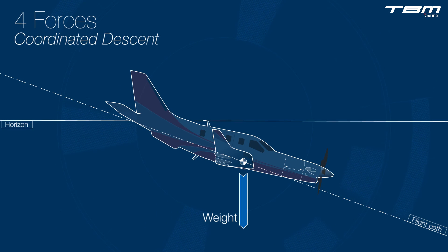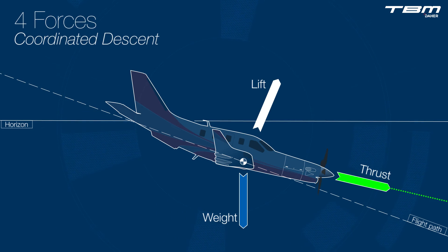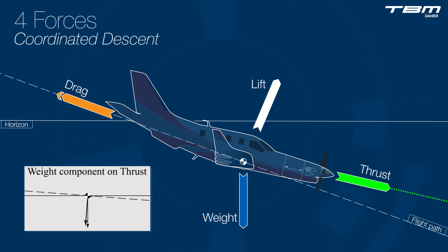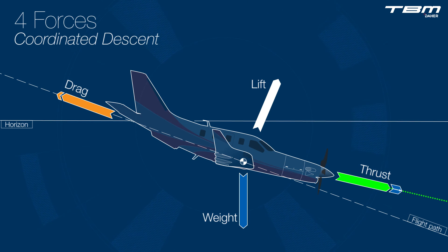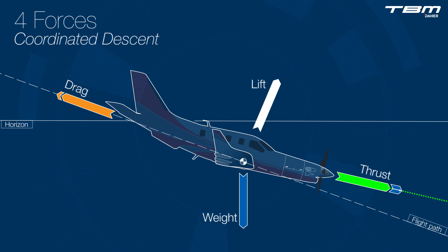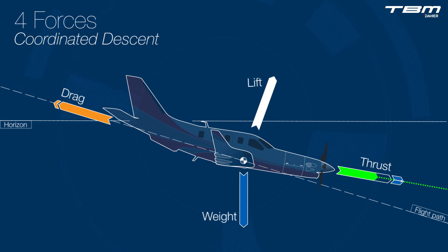At the top of the descent point, the TBM pitches over to begin the descent. Since weight acts towards the center of the earth, a forward component is created that complements the thrust vector. Airspeed will be allowed to accelerate to a desired value, for example 250 knots. Pitch, or a combination of pitch and power, can be used to bring the forces into balance. Since the descent phase of flight is normally flown with the autopilot on, the appropriate pitch mode is vertical speed, with adjustments in power used to manipulate indicated airspeed.